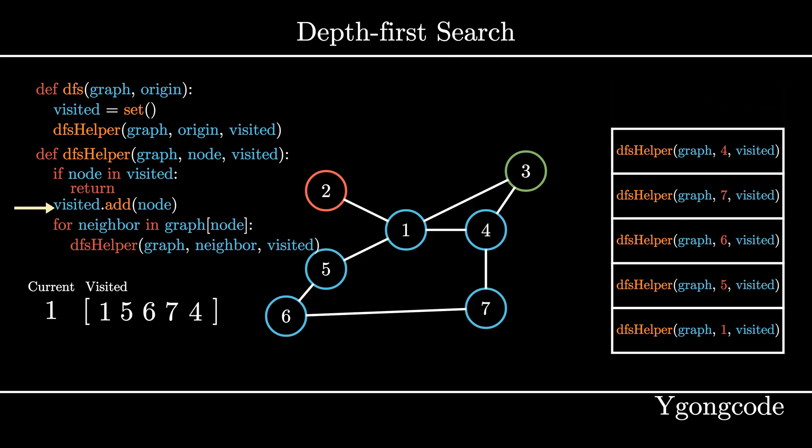At dfsHelper 4, we find the last neighbor, node 3, and call dfsHelper on node 3 and add it to the call stack.